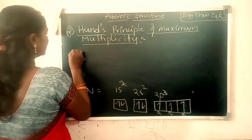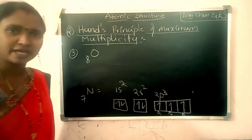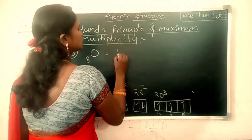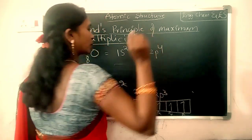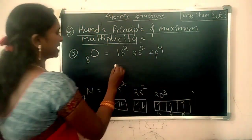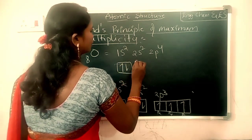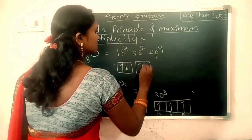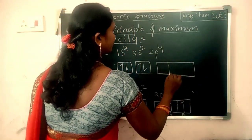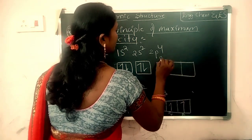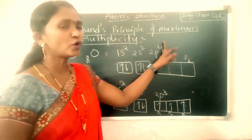Now let us take a third example — Oxygen. Oxygen has atomic number 8, meaning it contains 8 electrons. The electronic configuration is 1s2, 2s2, 2p4. Let us arrange the electrons. The 2 electrons in 1s can be paired, and 2s can also be paired. For the 2p orbital with 4 electrons, we have px, py, and pz. There are 4 electrons present in the p orbital.